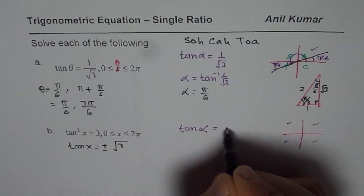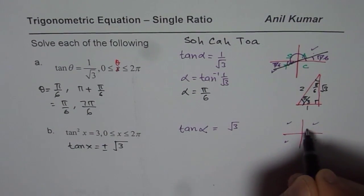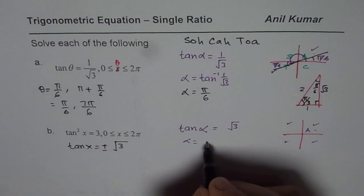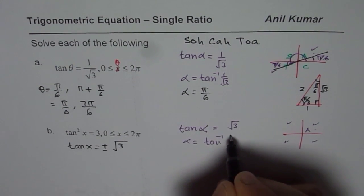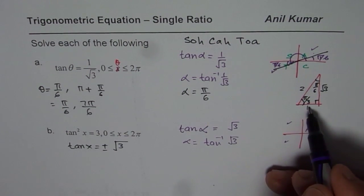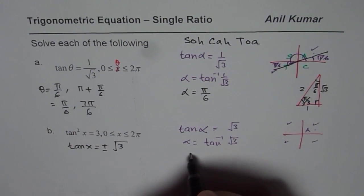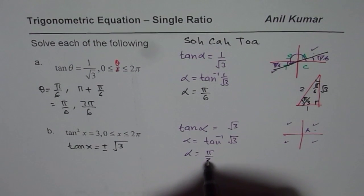Now second is find reference angle or acute angle. So we say tan alpha is square root of 3. Always take positive since we are looking for solution in quadrant 1. We can use this triangle. We know tan inverse of square root of 3 means angle is pi by 3. So we get alpha equals pi by 3.